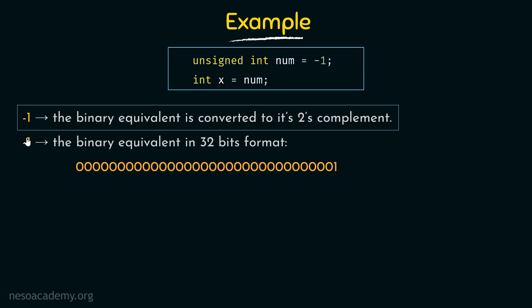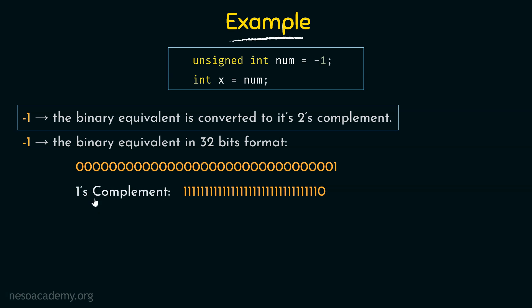First, ignore the sign and write 1 in binary in 32-bit format: 31 zeros followed by a 1 — that is the binary equivalent of 1 in 32-bit format. Now convert this binary number to its 2's complement. First, convert it to its 1's complement by inverting all bits: all 0's become 1's and the last 1 becomes 0. So all 31 zeros become ones and the last bit becomes zero — that is the 1's complement.